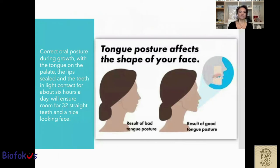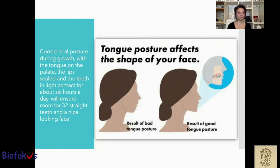Correct oral posture during growth — with the tongue on the palate, lip seal, and teeth in light contact for a minimum of 6 hours a day — will ensure room for 32 straight teeth and a nice-looking face. Tongue posture affects the shape of the face; a good posture can result in a very nice profile and a nice-looking face.